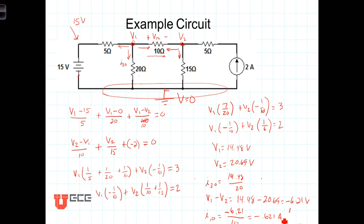What does that negative mean? We defined the current as going left to right, and that current going left to right is negative 0.621 amps, which means the current is actually flowing from right to left, from V2 to V1, with a magnitude of 0.621 amps. That makes sense, since V2 is larger than V1, we'd expect the actual current flow to be going from right to left.